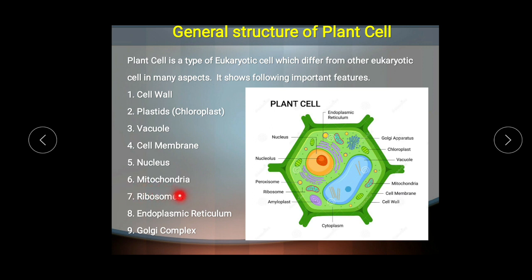Next are the ribosomes — these are the sites of protein synthesis. In plant cells, since they are eukaryotic cells, the ribosomes are of the 80S type, consisting of a large 60S subunit and a small 40S subunit — giving a total sedimentation value of 80S.